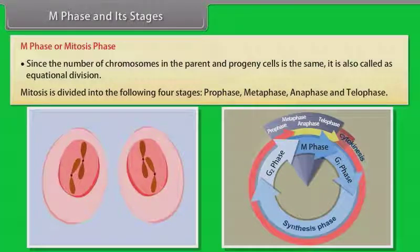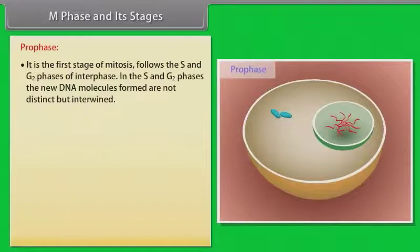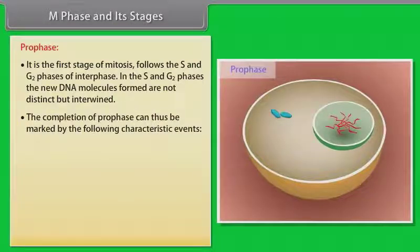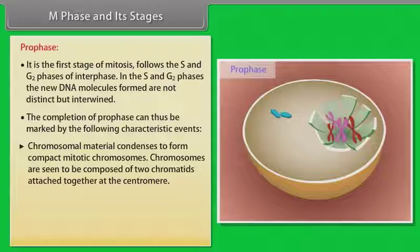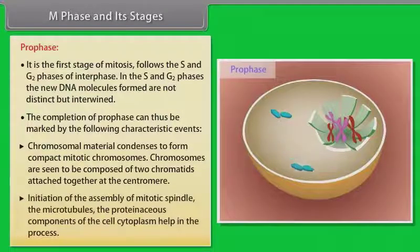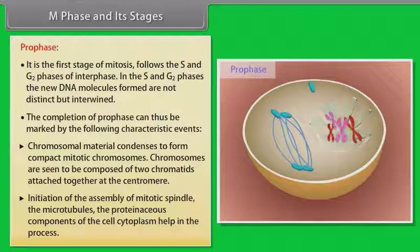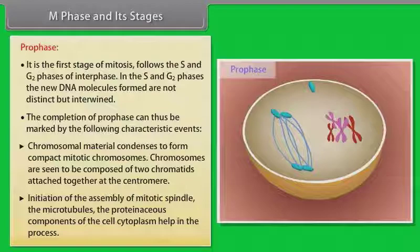The first stage of mitosis is prophase. It follows the S and G2 phases of interphase. In the S and G2 phases, the new DNA molecules formed are not distinct but intertwined. The completion of prophase can be marked by the following characteristic events: chromosomal material condenses to form compact mitotic chromosomes. Chromosomes are seen to be composed of two chromatids attached together at the centromere. Initiation of the assembly of mitotic spindle occurs, and the microtubules, the proteinaceous components of the cell cytoplasm, help in the process.